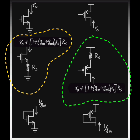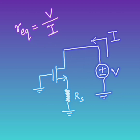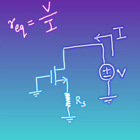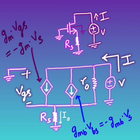We are going to calculate the impedance by looking into the drain of these circuits. The MOSFET has output resistance r0 and transconductance gm. To find the output impedance looking from the drain, you connect a voltage source of value v, measure the current i flowing from it, and the ratio v/i gives the output impedance. There is also a resistor Rs added at the source end, so the equivalent resistance seen from the drain will be higher than r0.